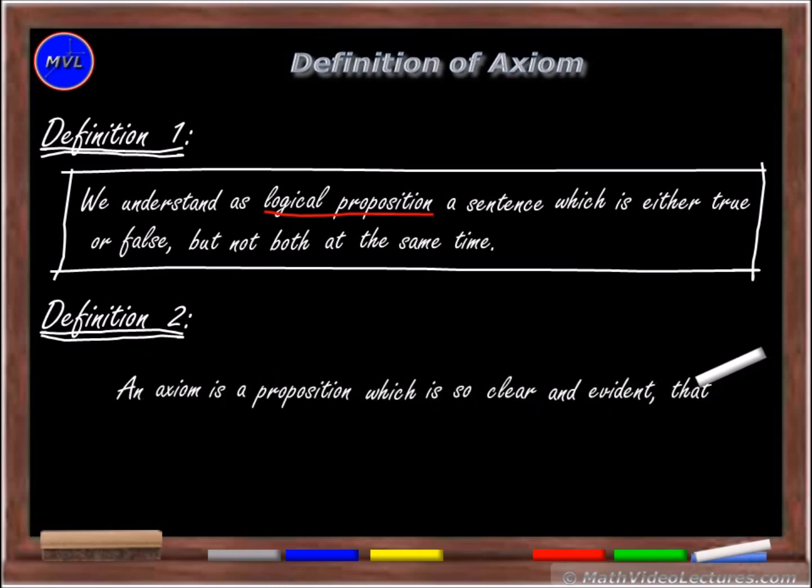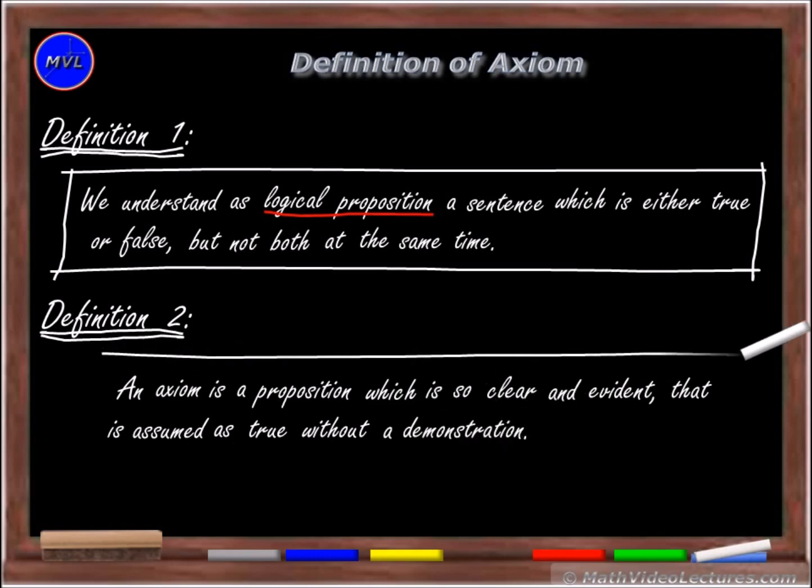Axiom is commonly defined as a proposition that is so clear and evident that can be assumed as true without a demonstration. In other words, an axiom is a concept so obvious that it is agreed upon without controversy.